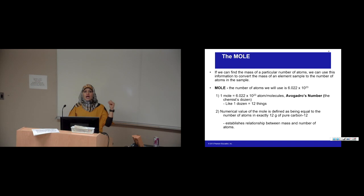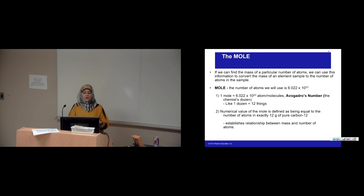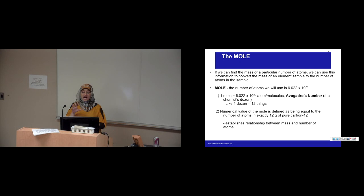We call that the chemist's dozen because it's like saying one dozen has 12 things in it. One mole of anything — whether it's atoms, molecules, or formula units, which together we call particles — is 6.022 times 10 to the 23rd. That's a lot larger than 12. The numerical value of the mole is defined as equal to the number of atoms in exactly 12 grams of carbon-12.